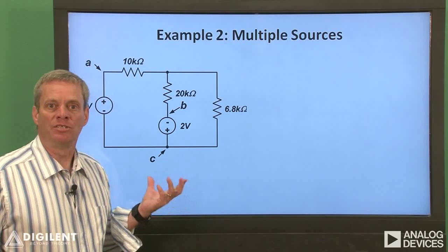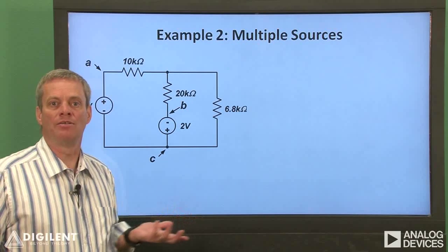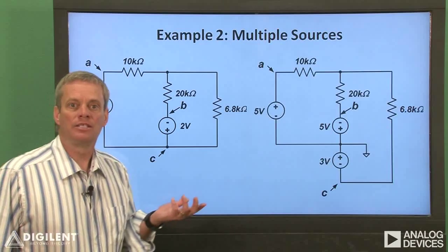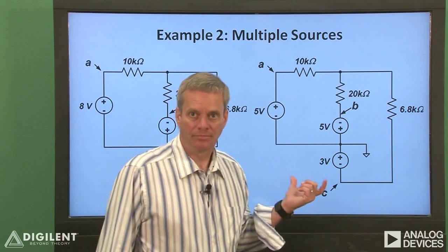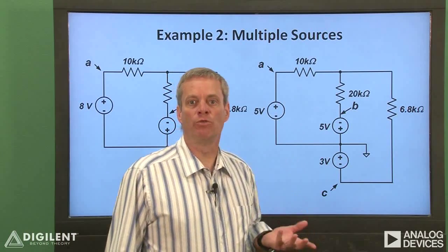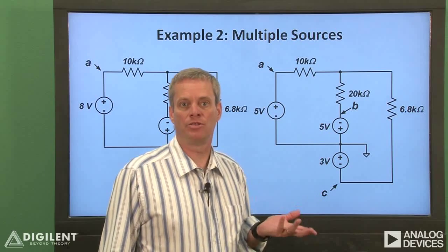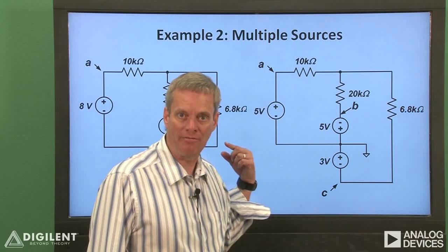It simply wants the voltage VAC to be 8 volts and VBC to be negative 2 volts. We can get around our difficulty by connecting the analog discovery's ground in a creative way. Let's take a look at this circuit. In this circuit, we've used 3 voltage supplies on the analog discovery to implement the 2 voltage supplies in the circuit on the left.